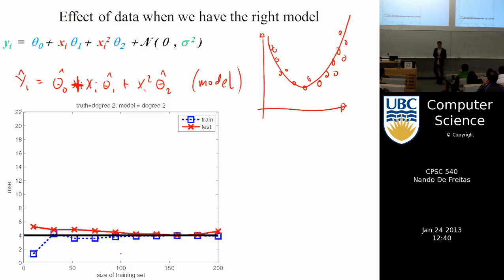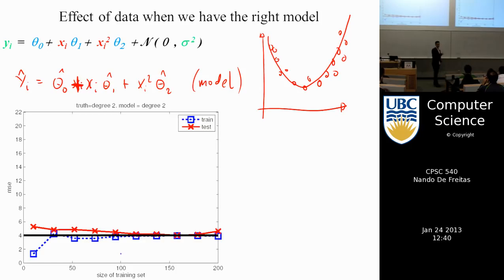I'm going to take a step back to finish some things I was pointing out in the last class. We'll continue with linear regression, because if we can do linear regression it will be obvious we can do nonlinear regression. The principles — cross-validation, regularization — all carry through. If we learn them with linear models, then we just need a bit more work with nonlinear models, and we'll still be able to use all these ideas.